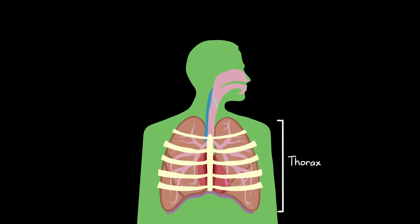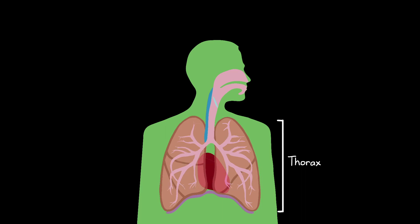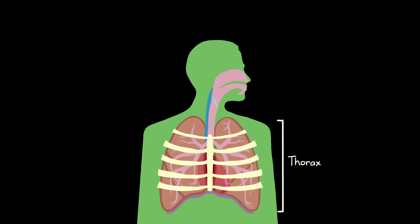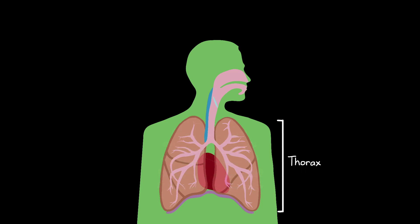Your heart is located inside your thorax, which is basically your chest area. This is the rib cage here, also called the thoracic cage, and its role is to help protect your heart and lungs. Now let's remove the rib cage to get a better look at everything inside.